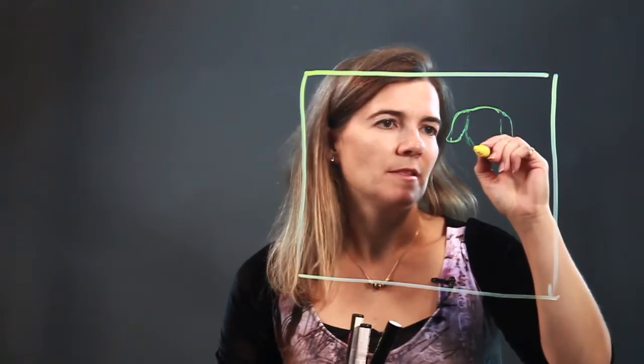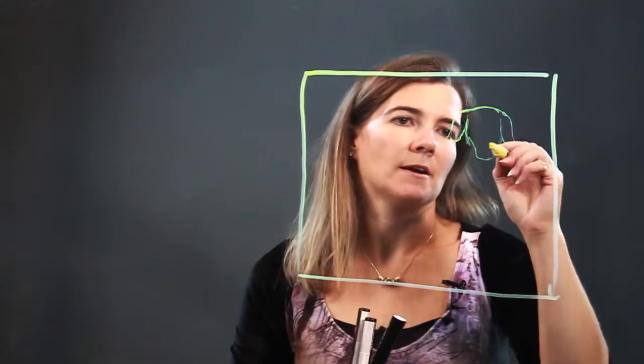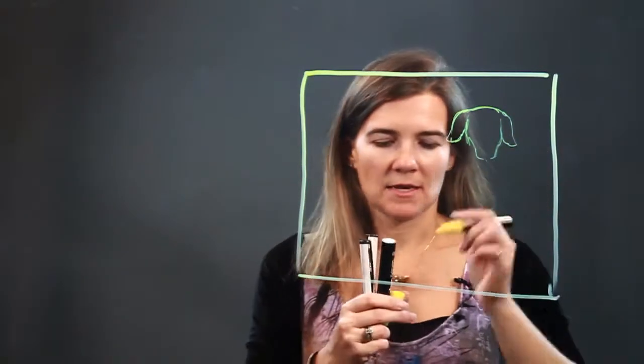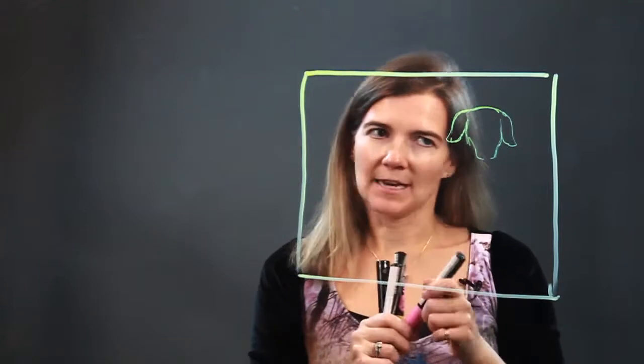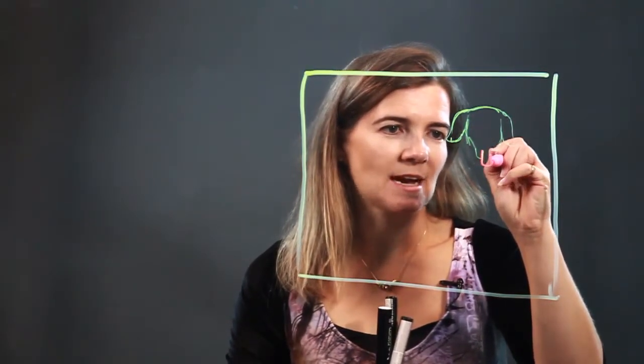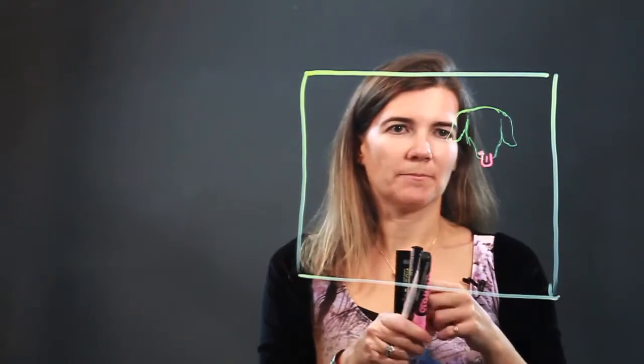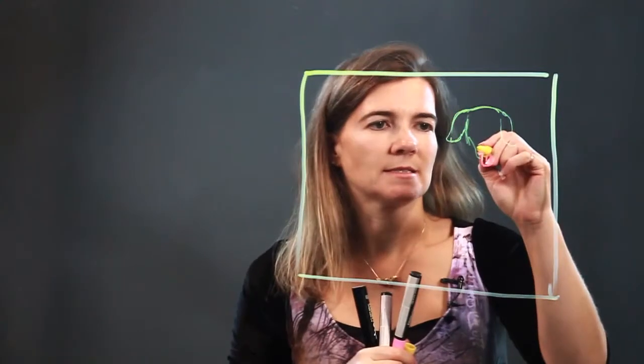And then the face. The nose is kind of pointed, so making a pointed shape here. And then golden retrievers often have very happy faces and tongues sticking out because that means hey, I want to meet you, come over here so I can give you a big lick.